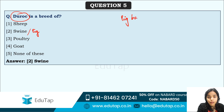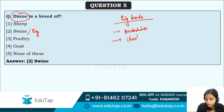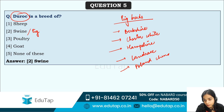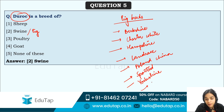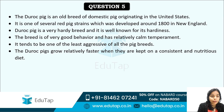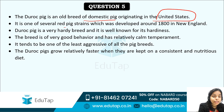Other important breeds of pig to remember: Berkshire, Chester White, Hampshire, Landrace, Poland China, Spotted breed, and Yorkshire. Duroc is an old breed of domestic pig that originated in the United States, developed around the 1800s in New England. It is known for very good behavior and a relatively calm temperament.